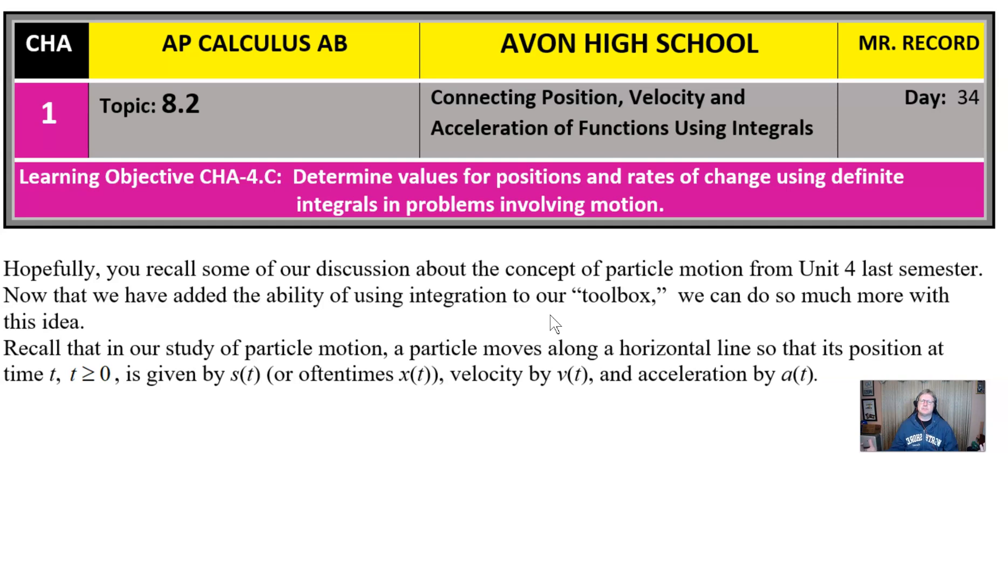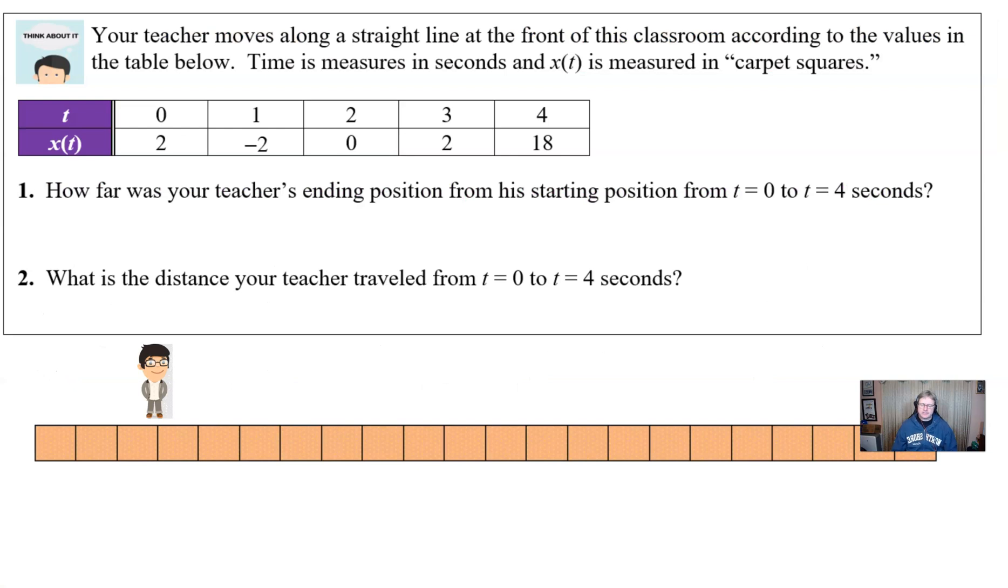It's likely that you certainly talked about this in the first semester of your course. And one of the things that I want you to remember is that in our study of particle motion, a particle moves along a horizontal line, typically on the AP exam. Sometimes we can have things move on a vertical line that will not be affected by gravity, though. And we would call the position sometimes S of T, maybe sometimes X of T if we choose to do so. But the velocity is typically V of T and the acceleration is A of T. Won't talk too much about velocity or acceleration in this activity, but let's see if this makes sense.